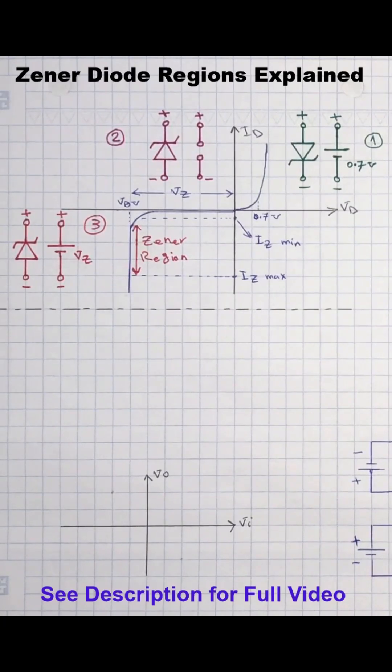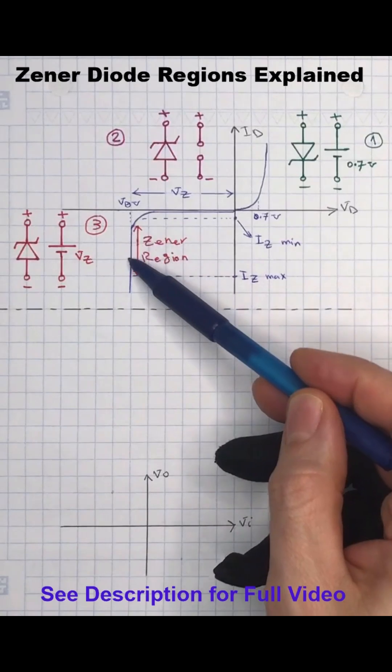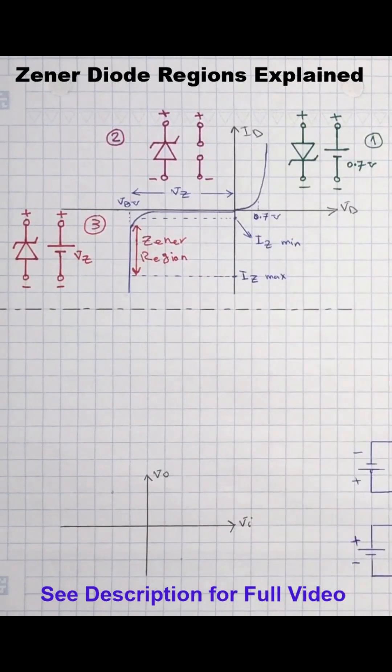As you can see the breakdown region in the IV curve here. When the reverse voltage is applied to the Zener diode then a voltage remains constant even for a wide range of current flowing through it. This is the region a Zener diode expected to be in and operates in most electronic circuits.